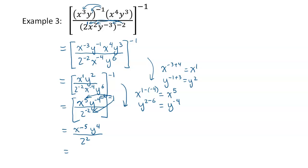The very last step is to apply the negative exponent: X to the power of negative five becomes one over X to the fifth. So Y to the fourth is the only thing staying in the numerator. Two squared is four, and we have X to the fifth on the denominator. That's your final answer for the third example.